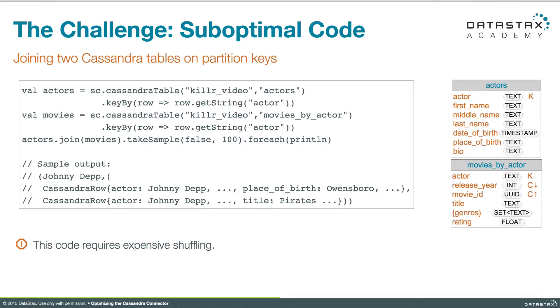We get an RDD of actors with a trivial query from the actors table, converted into a pair RDD. Same thing with movies, converted into a pair RDD by actor. And then we join those together, take a sample and print it out. Nothing could be easier, but we can do better.